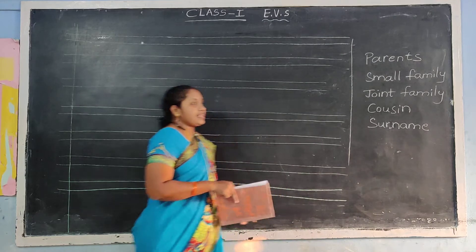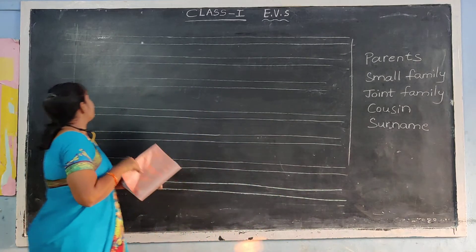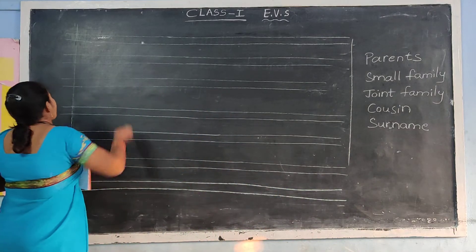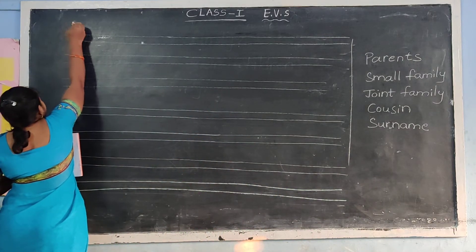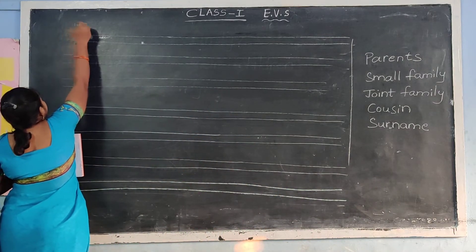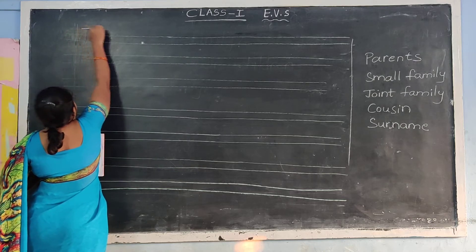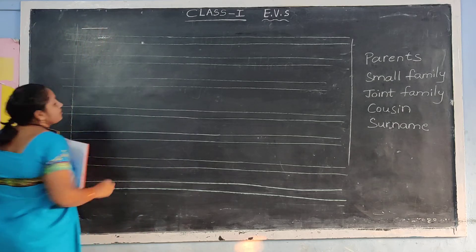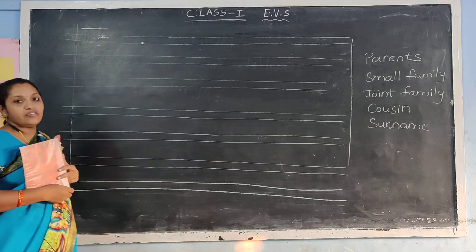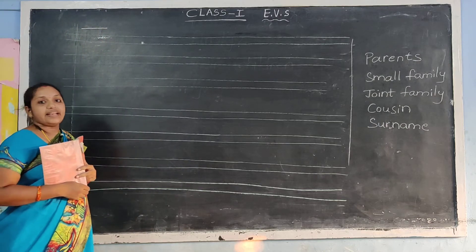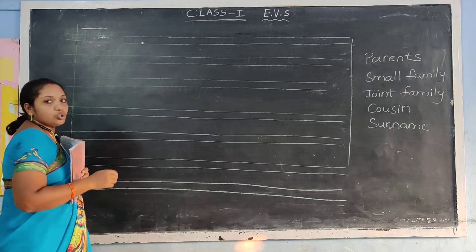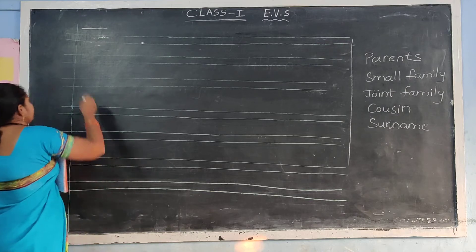Next slide. Write the date mark. Now let's write the next slide. Leave that line. Directed line, leave it right. Next slide. Two in the margin.